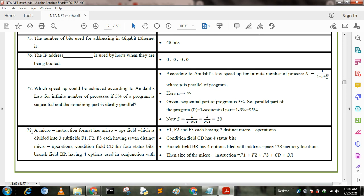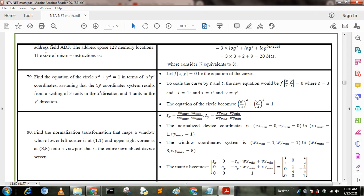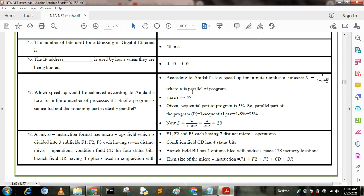Now I describe question number 78. A micro-instruction format has a micro-operations field which is divided into 3 subfields F1, F2, F3, each having 7 distinct micro-operations. Condition field CD for status bit, branch field BR having 4 options used in conjunction with address space with 128 memory locations.